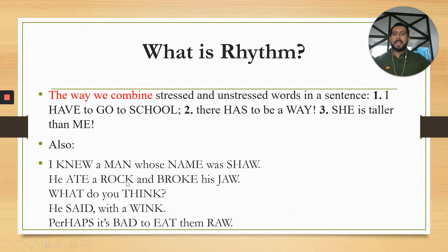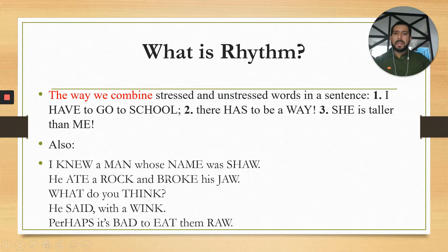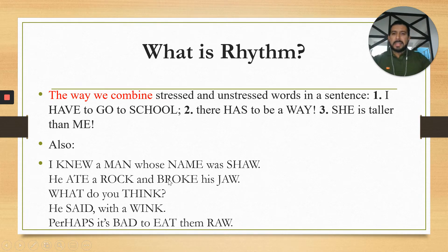Check it out — you can clap along. It goes: 'I knew a man whose name was Shaw. He ate a rock and broke his jaw. What do you think? Is that with a wink? Perhaps it's bad to eat them raw.' That's rhythm. Notice how I'm reducing everything — I don't say 'I KNEW,' but 'I knew a man whose name was Shaw.' I reduce 'he,' 'a,' and 'his.' The words that stand out are called content words, and the ones I reduce are called function words.